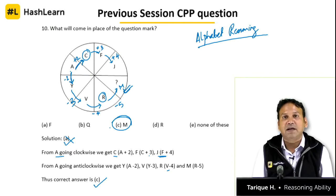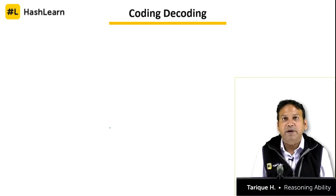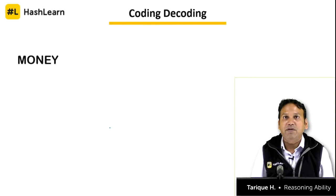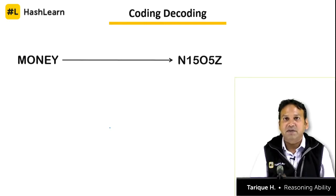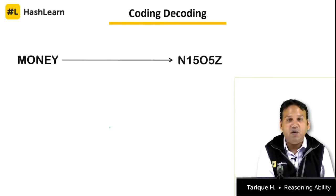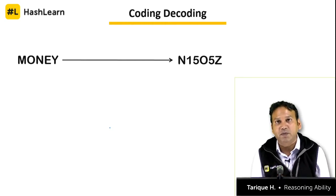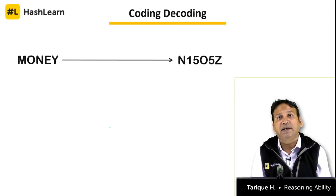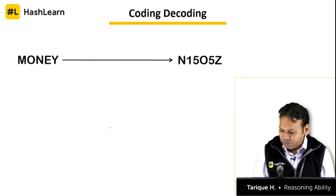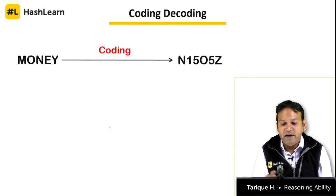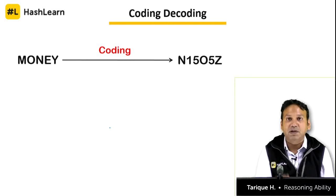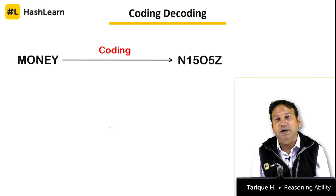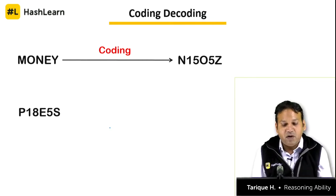This was the question from the previous CPP. Now let us look at the coding and decoding topic. First, let us understand the meaning of coding and decoding. You take a word like 'money' and transform it into something not recognizable as the original word — something only you or someone who knows the coding technique can understand. This transformation of 'money' into its code N1505Z is called coding. When you convert the code back into its original word, that is called decoding.